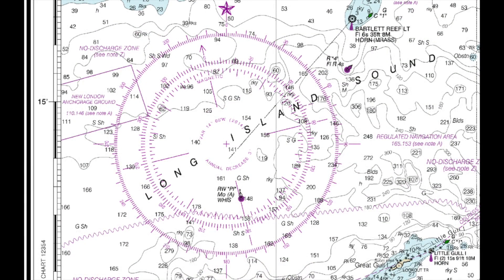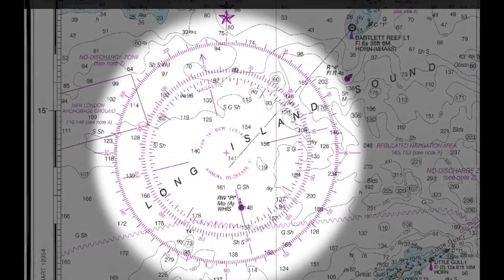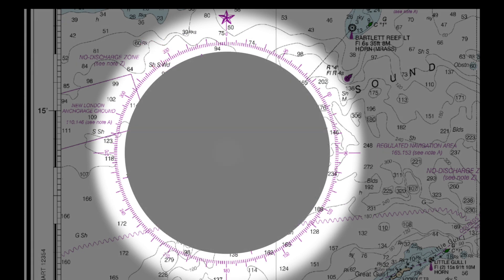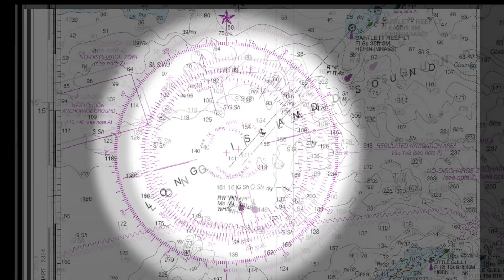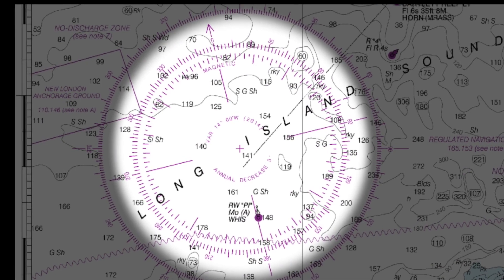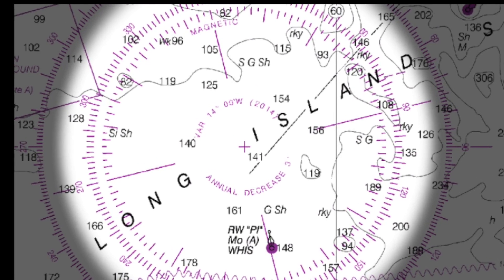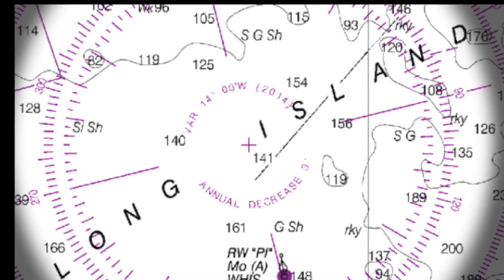At various places throughout the chart, you'll find a group of three concentric circles with ruler-like hash marks. This is called a compass rose, and it indicates true north on the outer circle and magnetic north on the inner circles. The outermost circle with the star on top indicates true or geographic north. Surrounding the crosshair at the center of the compass rose, you'll find information regarding the variation for that particular chart, along with its annual increase or decrease in variation.